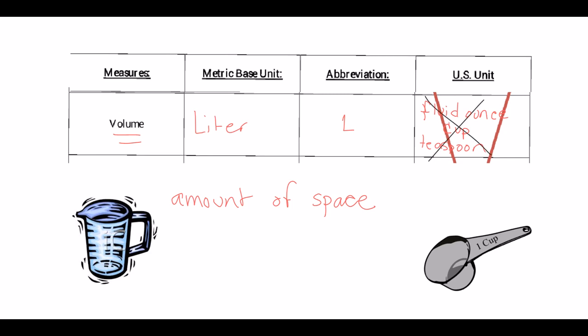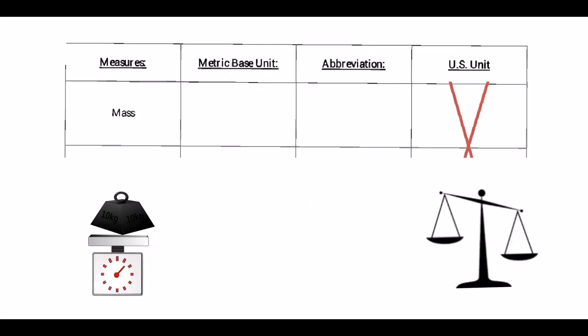Next, we want to talk about mass. Mass is actually known as the amount of matter, but most people tend to think of it as how heavy it is. We want to start using that term: the amount of matter in an object. The metric base unit for mass is actually the kilogram.